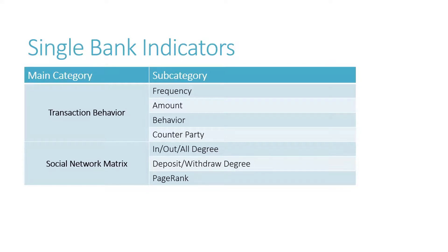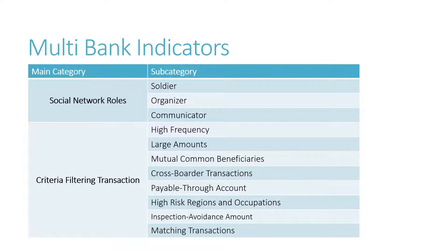For more details about the signals, please refer to the report for more information. During this step, we transform the money laundering activities into quantifiable signals based on guidelines provided by law enforcement bodies, which can be used for machine learning models. As for the multi-bank indicators construction, it is to deal with more prevalent cross-bank and cross-border transactions nowadays. We will mainly analyze them from the social network role and transaction characteristic perspectives.